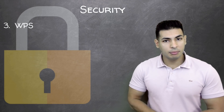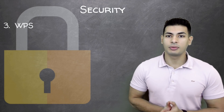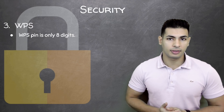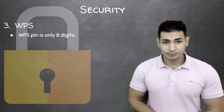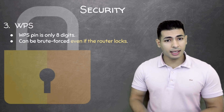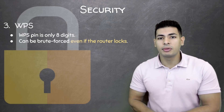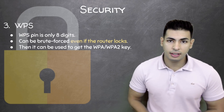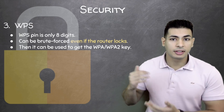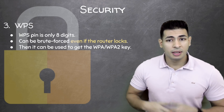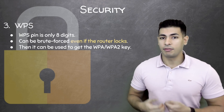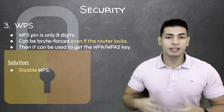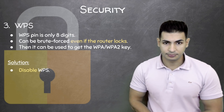Next is WPS, and we've seen how we can force some routers to give up their PIN. There are more secure ways of implementing WPS — such as disabling push-button authentication and locking after a number of failed attempts — but if you want to be secure, just disable WPS entirely. That will make Reaver not work at all.